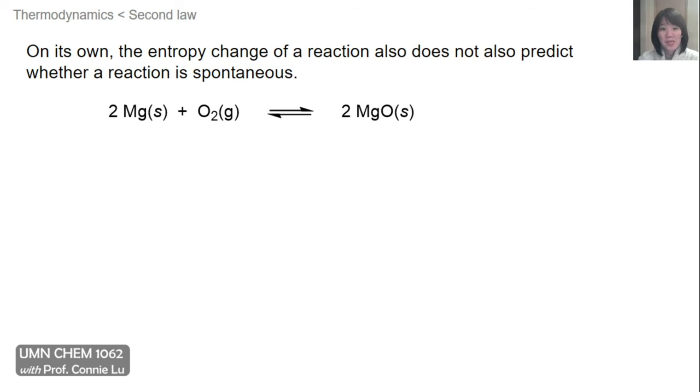On the flip side, the entropy change of a reaction also does not predict whether a reaction is spontaneous. So here's a counter example. We have magnesium burning in oxygen to form magnesium oxide. Now in this reaction, entropy favors the reactants because we have oxygen and it's a gas. On the other hand, enthalpy favors the product because the strong magnesium oxygen bonds that are formed release a lot of heat in this reaction. So the delta H of the reaction is highly exothermic and that is very favored. On the other hand, the change in entropy is negative and that means it's disfavored.